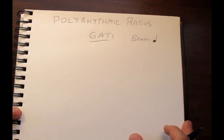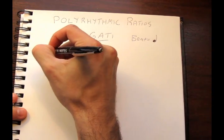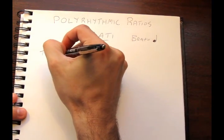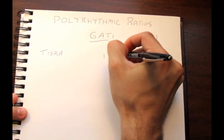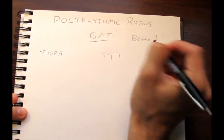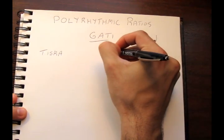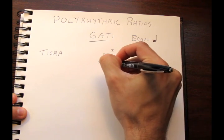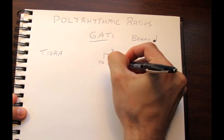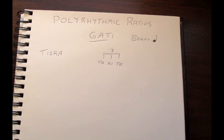The first gati is known as tisra. Tisra is a triplet, so we are going to make an eighth note triplet using the syllables ta-ki-ta. Ta-ki-ta, ta-ki-ta, ta-ki-ta, ta-ki-ta.